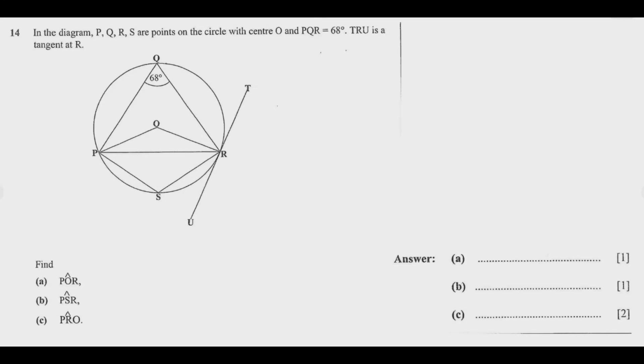Before I answer question by question, I can find the angle at the center. I can find this angle using the angle at the center theorem, which states that the angle at the center is twice the angle at the circumference. So to find the angle at the center, I multiply 68 by 2. 2 times 8 is 16, carry 1. 2 times 6 is 12 plus 1, which is 13. So this angle is 136.